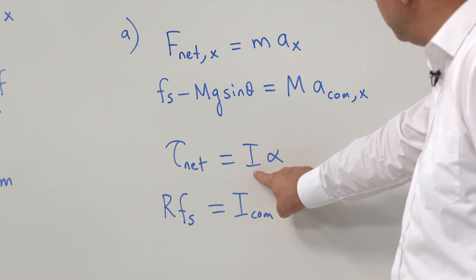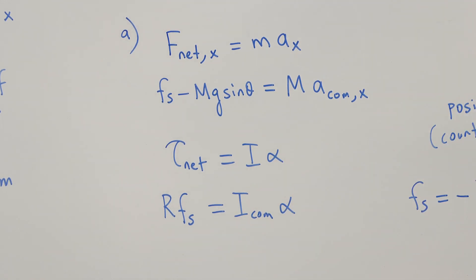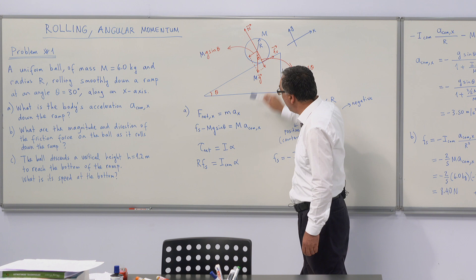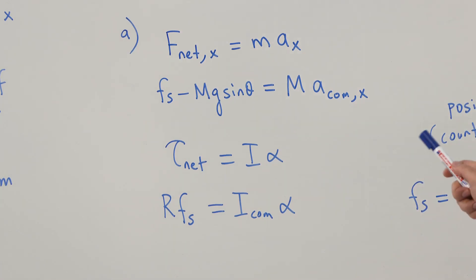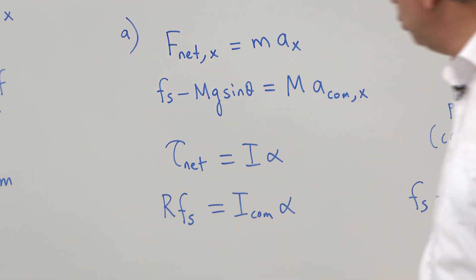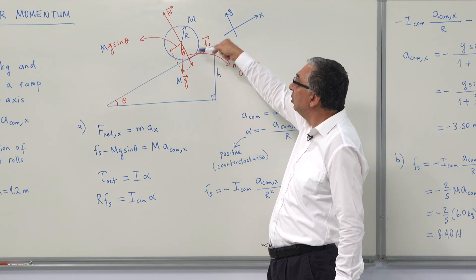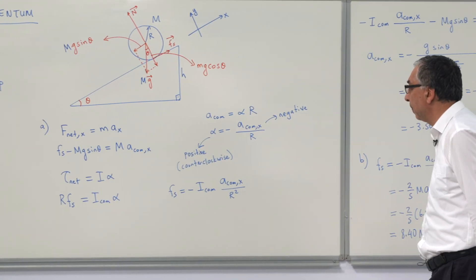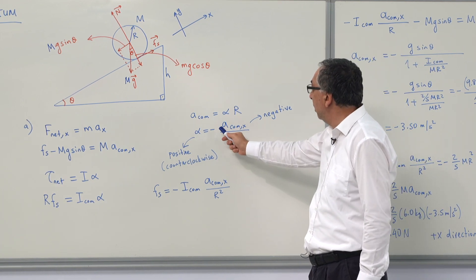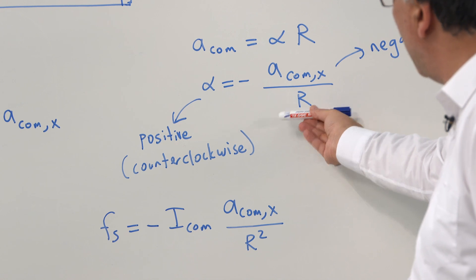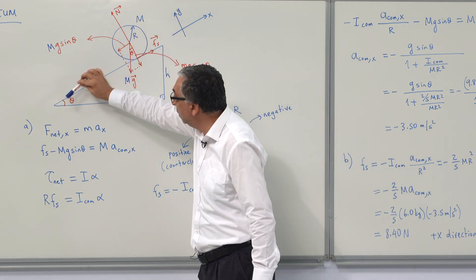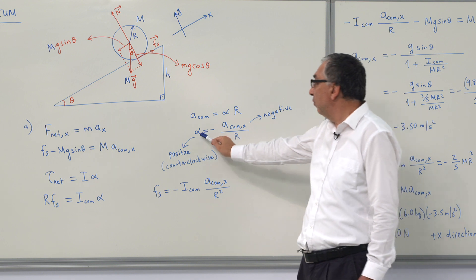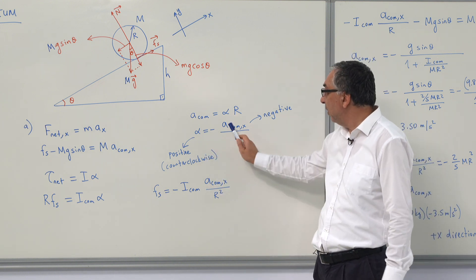The net torque equals rotational inertia times angular acceleration. The torque is the frictional force times r — they are perpendicular, so sin 90° = 1. Static frictional force causes the torque: f·r = I·α. The angular acceleration α equals the linear acceleration divided by r, but with a sign consideration: alpha is positive and linear acceleration a is negative since the ball accelerates in the negative x-direction and rotates counterclockwise.